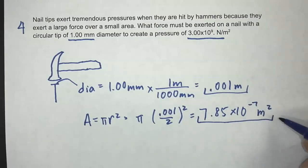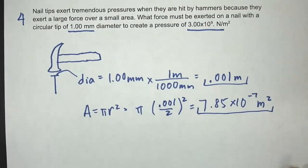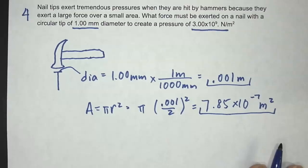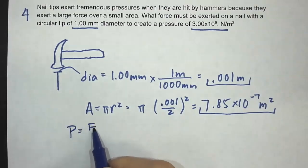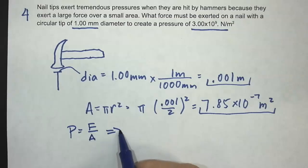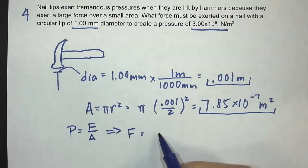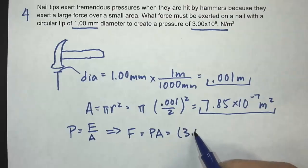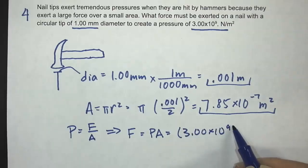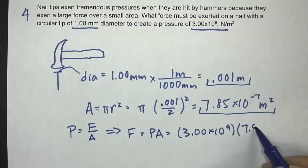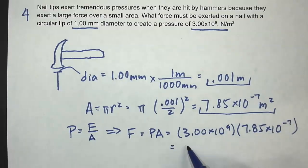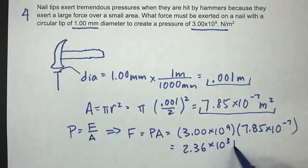Now I have the area and I'm looking for the force. The pressure was given. P equals F over A, so F equals P times A. The pressure is 3 times 10 to the 9th, and the area is 7.85 times 10 to the negative 7, giving 2.36 times 10 to the 3rd newtons.